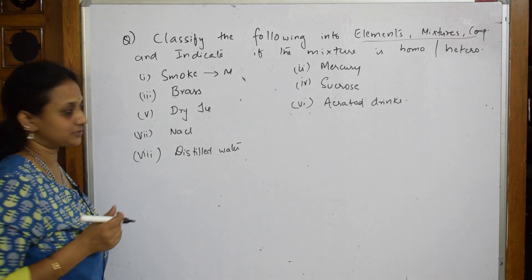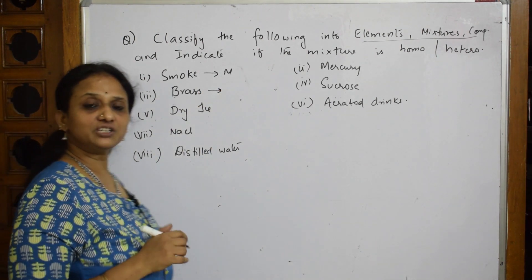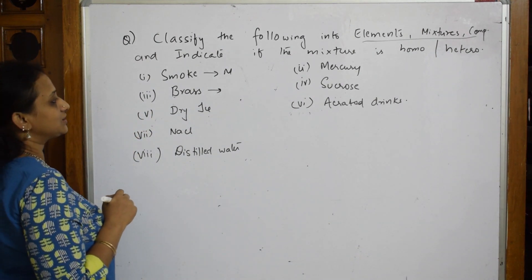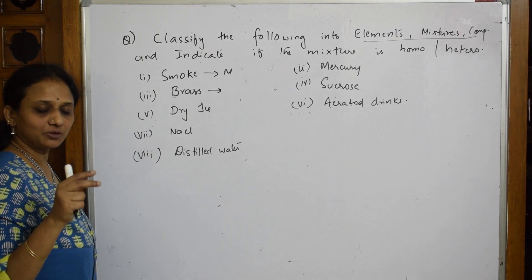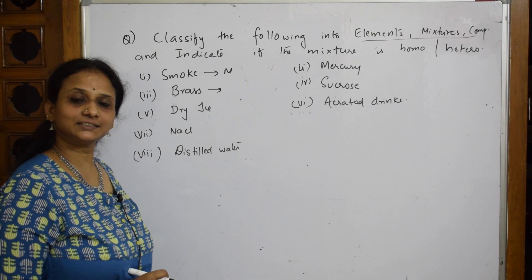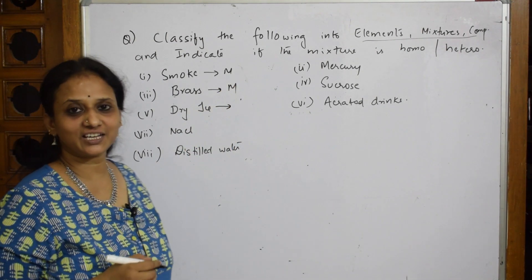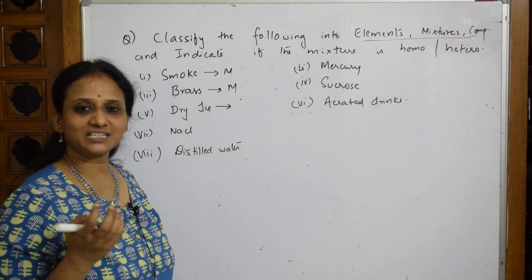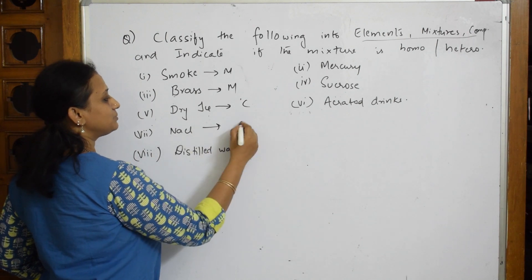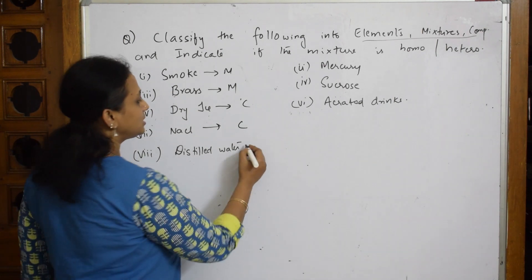Brass is a combination of copper and zinc, so brass is again a mixture. Dry ice is basically a compound. NaCl is a combination of two pure elements — it is a compound. Distilled water, H2O, is a combination of hydrogen and oxygen — it is a compound.